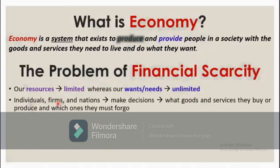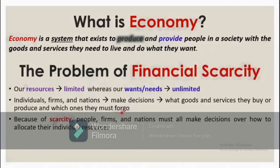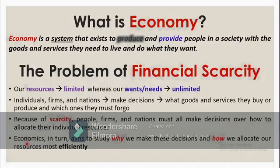Individuals, firms, organizations, and nations make decisions about what goods and services they buy or produce, and which ones they must forgo. Because of scarcity, people, firms, and nations must all make decisions over how to allocate their individual resources. Economics in turn aims to study why we make these decisions and how we allocate our resources most efficiently.